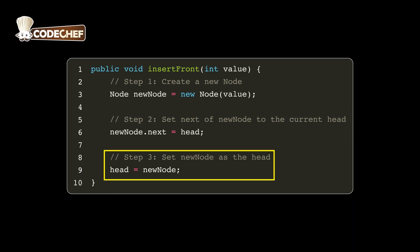Step 3: We update the head pointer to point to the new node, making it the first node in the list. And that's how you insert a node at the beginning of a linked list in code.